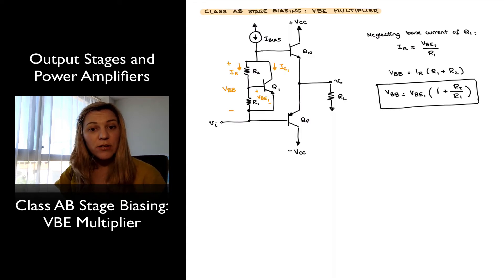It's going to be easy to set resistor ratios accurately, much more easy than it will be to set absolute resistor values accurately. Notice that all that is multiplied by VBE1, the VBE of transistor Q1—and that's the name, VBE multiplier.